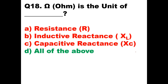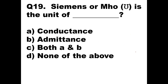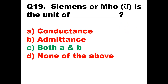Question 19: Siemens or Mho — which is just the opposite of ohm — is the unit of what? Siemens or Mho is the unit of conductance, which allows the flow of current. Admittance, which is the reciprocal of impedance, also has the unit Mho. So both conductance and admittance have the unit Mho — the answer is both A and B.